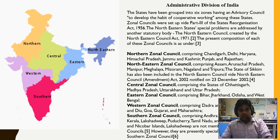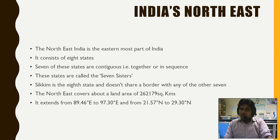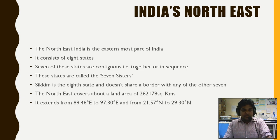Here we have collected information about the northeastern part of India that will be helpful for your preparation — each point might be an MCQ question. Northeast India is the easternmost part of India. It consists of eight states: the Seven Sisters and Sikkim. Seven of the states are contiguous and are called the Seven Sisters. Sikkim is the eighth state and does not share a border with any of the other seven — that is important to know.